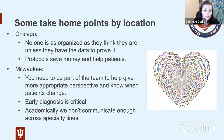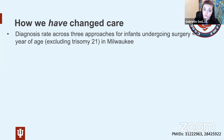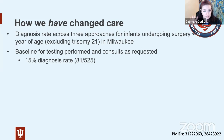Looking at diagnosis rate across three approaches to genetic testing in infants undergoing surgery at less than one year of age — excluding trisomy 21 — our baseline testing when we were 'doing arrays on everybody' was 15%: 81 out of 525 individuals. Our actual array rate was less than half, so we certainly weren't doing arrays on all these individuals.